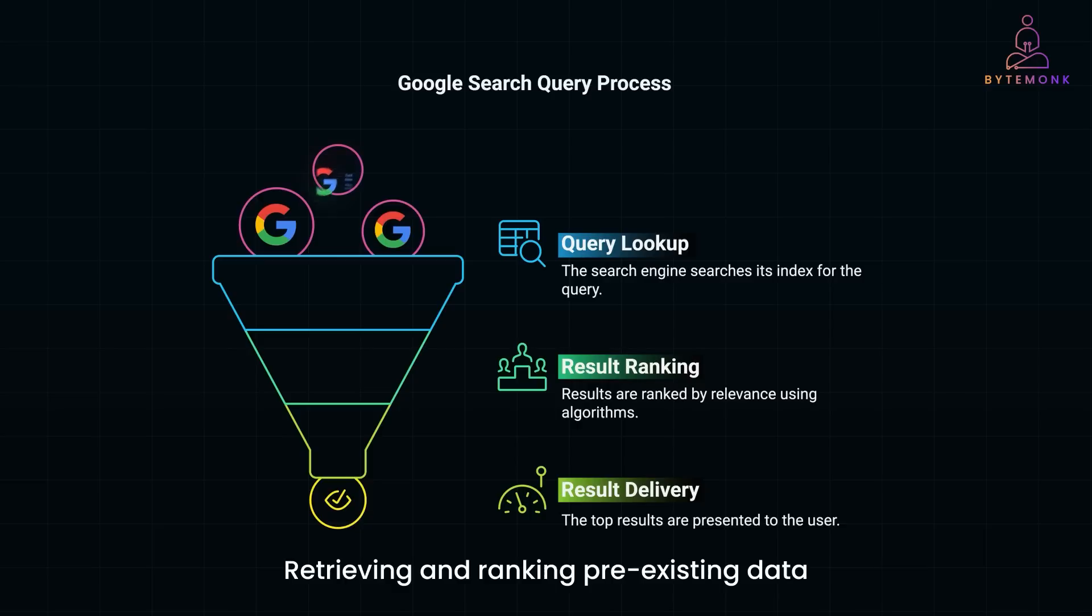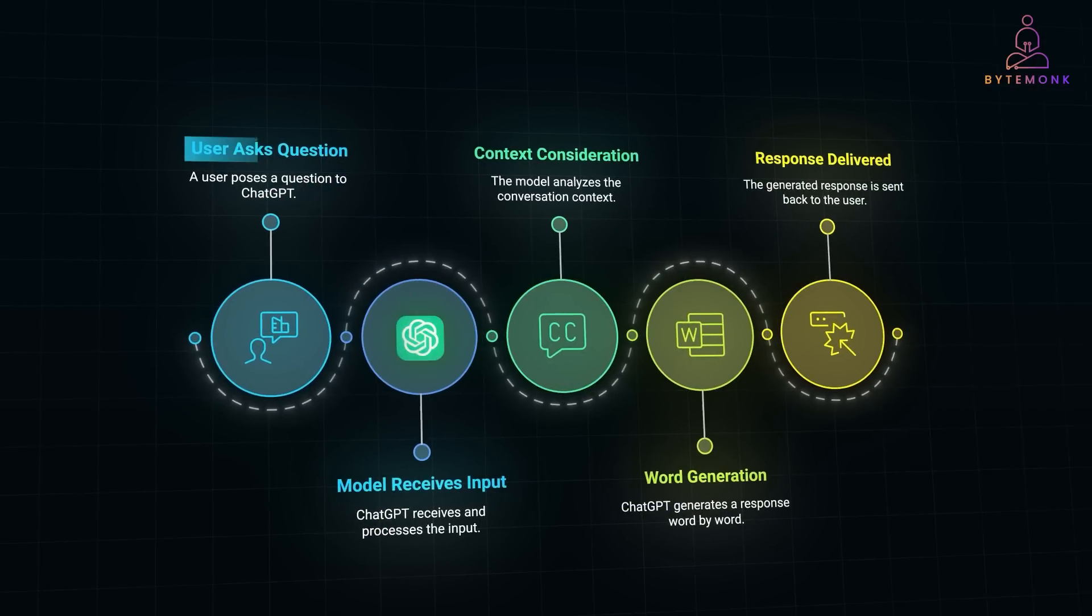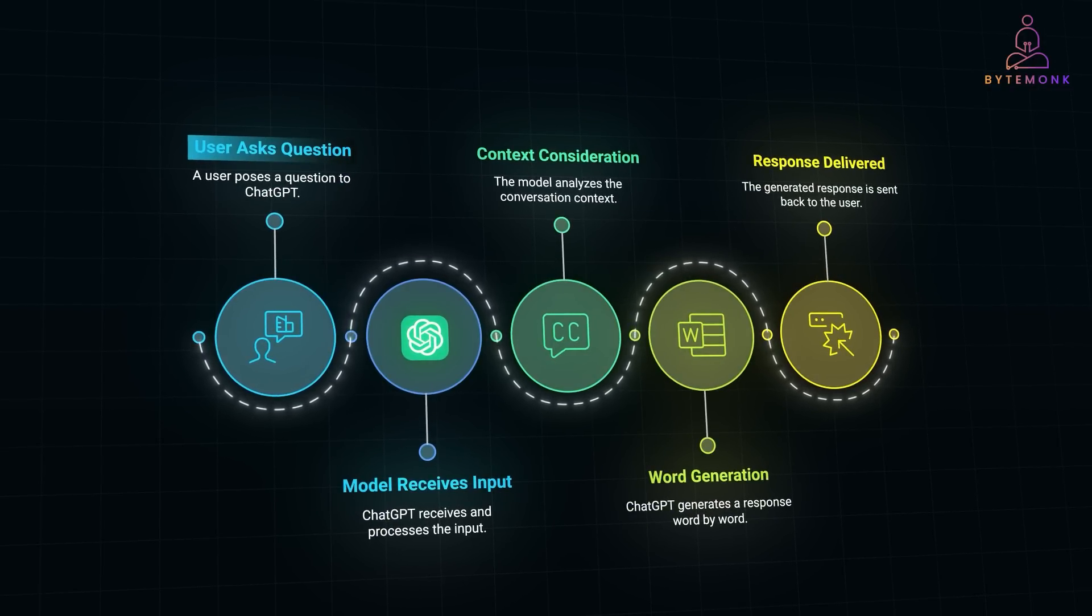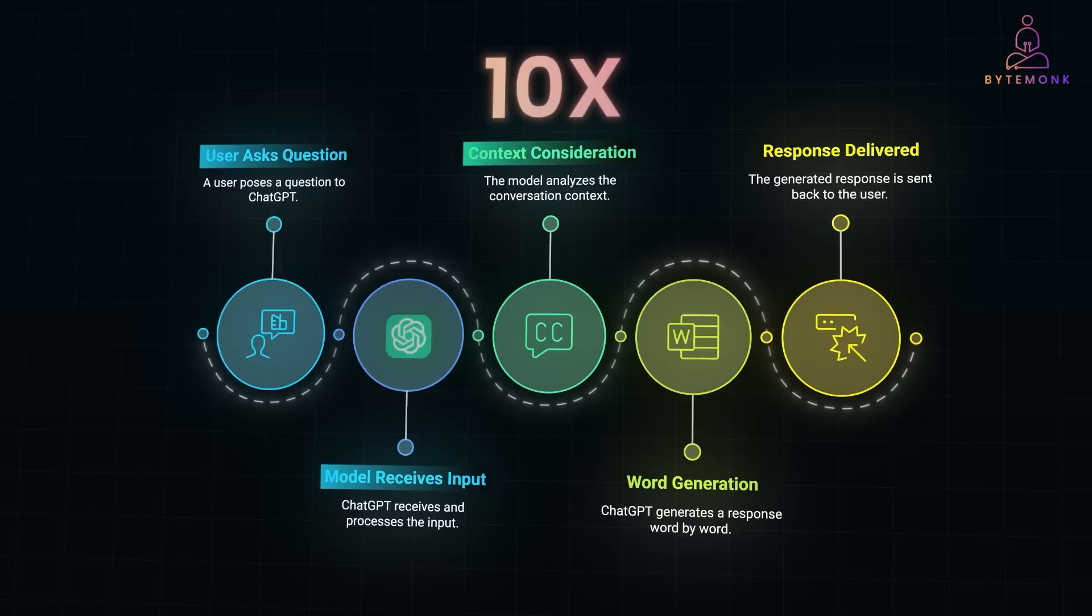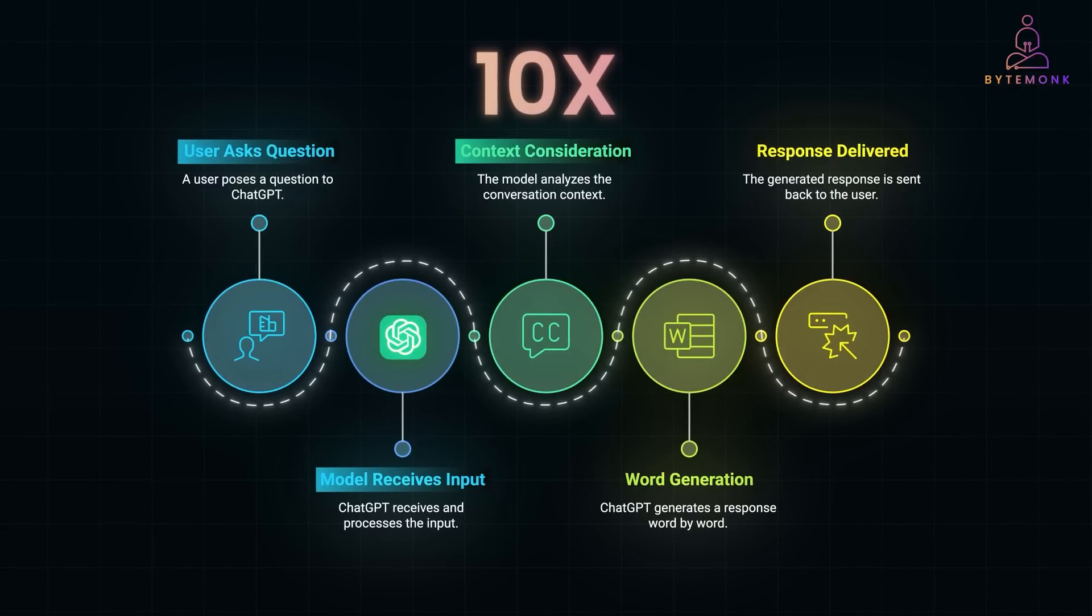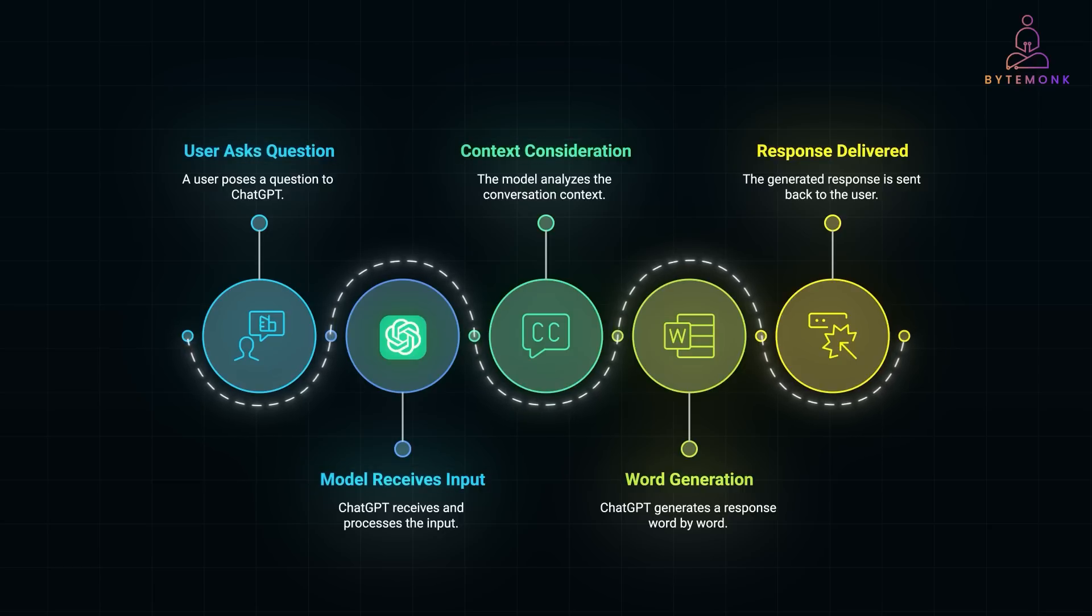Now let's compare that to ChatGPT. When you ask ChatGPT a question, it doesn't just retrieve pre-written answers. Instead, it generates a response word by word based on patterns it learned during training. And this involves running a massive neural network with billions of parameters. Each word generated requires the model to perform millions of calculations. The model also considers context from the conversation which adds another layer of complexity. And this is why a single ChatGPT query can require 10 times more processing power than a simple Google search. And it's not just about retrieving data, it's about generating new content in real time, which is far more computationally demanding.